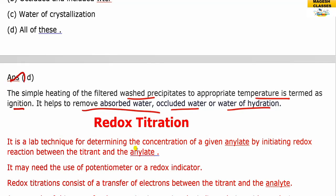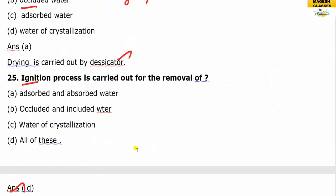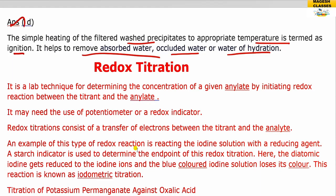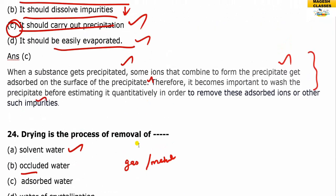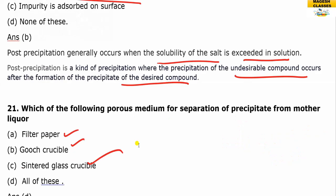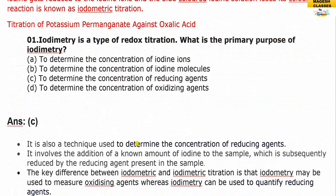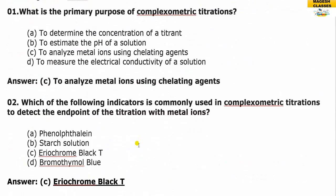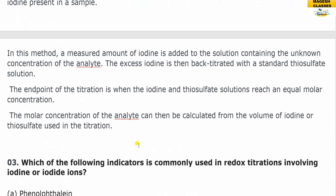So in analytical chemistry, our syllabus includes conductometric, compleximetric, redox, and gravimetric analysis. The questions related to gravimetric analysis were covered today. Redox titration and compleximetric titration will be discussed in the upcoming videos. Thank you for watching.